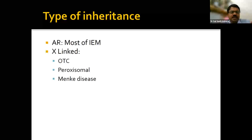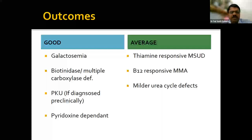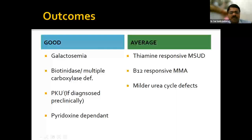Regarding inheritance: autosomal recessive is the most common pattern. Some are X-linked — ornithine transcarbamylase deficiency in urea cycle defects, peroxisomal disorders (X-linked), and Menkes disease (X-linked). Mitochondrial inheritance applies to all mitochondrial disorders. In terms of outcomes: galactosemia, biotinidase deficiency, PKU, and pyridoxine-dependent seizures have very good outcomes if diagnosed early. Average outcomes are seen with thiamine-responsive MSUD, mild urea cycle defects, and B12-responsive methylmalonic acidemia.